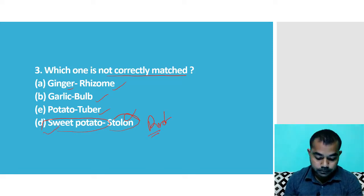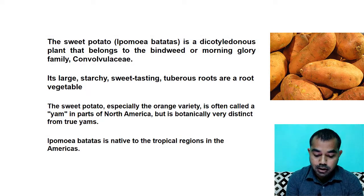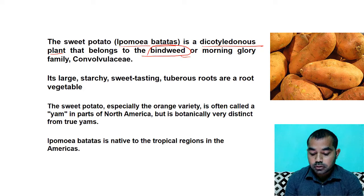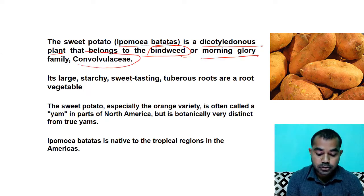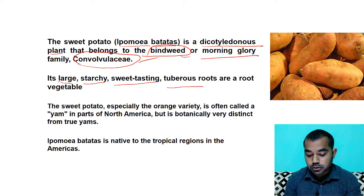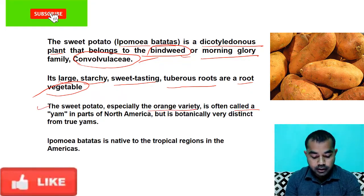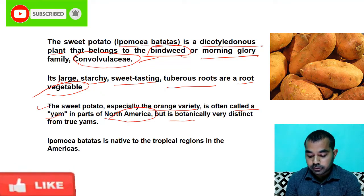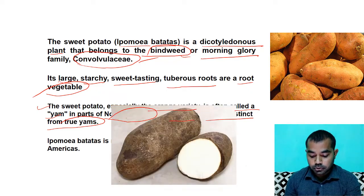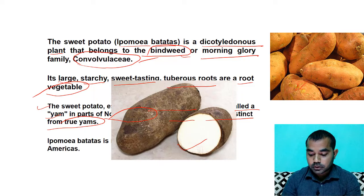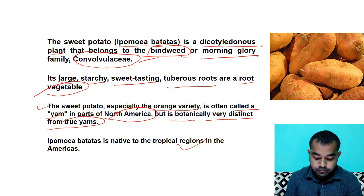Botanically, sweet potato is called Ipomoea batata. It is a dicotyledonous plant that belongs to the bindweed or morning glory family, Convolvulaceae. It is a large, starchy, sweet-tasting tuberous root and is a root vegetable. The sweet potato, especially the orange variety, is often called a yam in North America, but it is very distinct from the true yam. Ipomoea batata is native to the tropical region of the Americas.